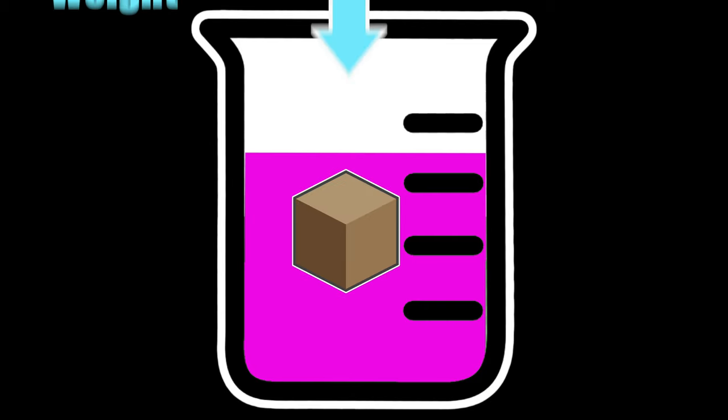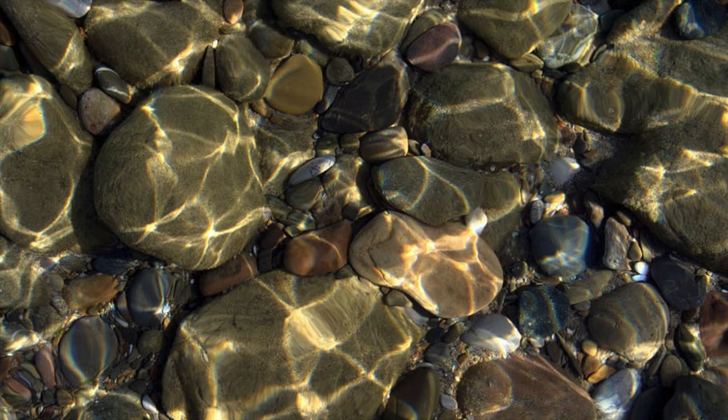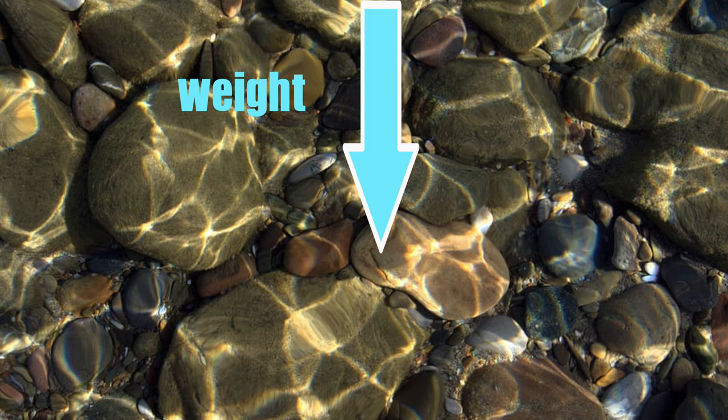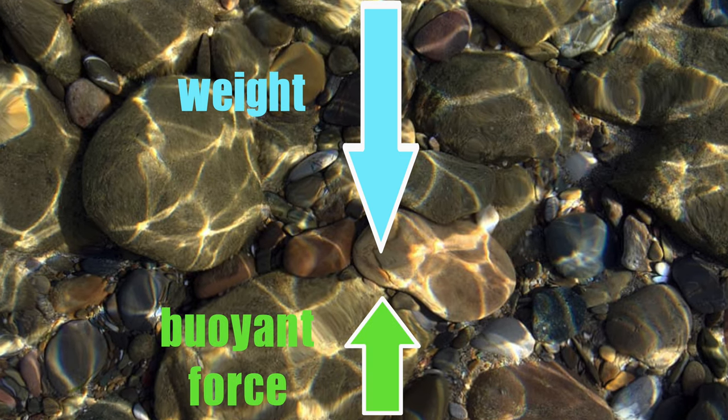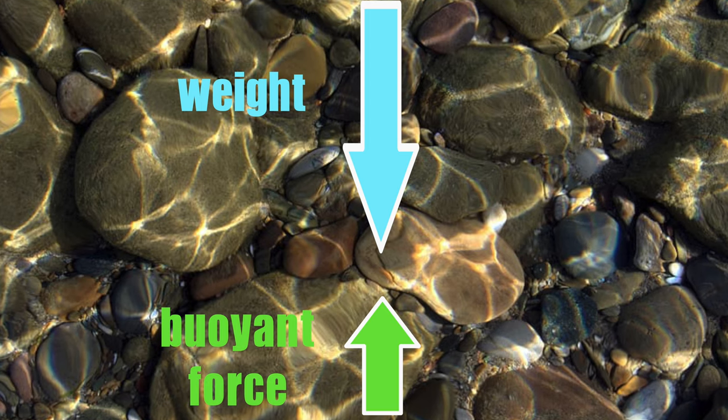If the weight of an object is the same as that of the displaced fluid, it will not sink or float. Its buoyancy is the same as its weight. If the weight of an object is heavier than that of the displaced fluid, then its buoyancy is less than its weight. It will sink. This explains why pebbles do not float in water.